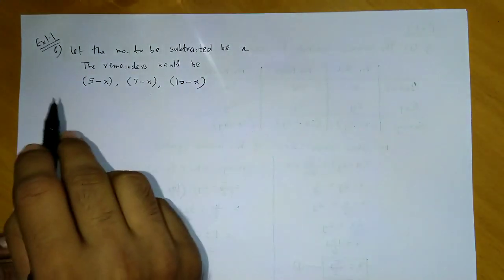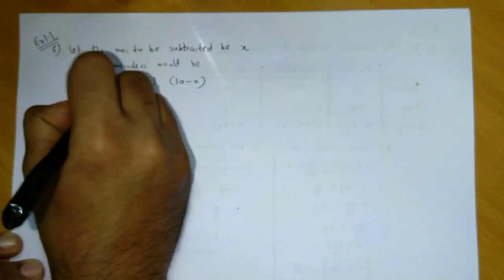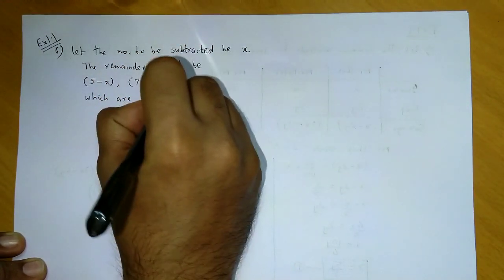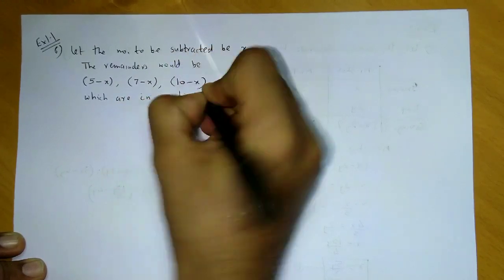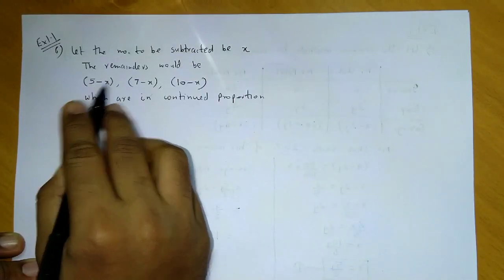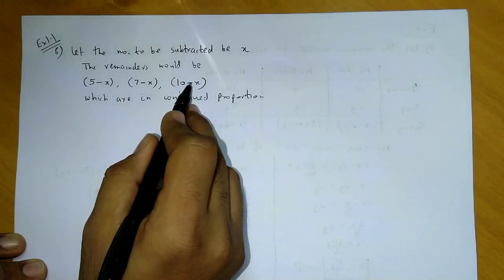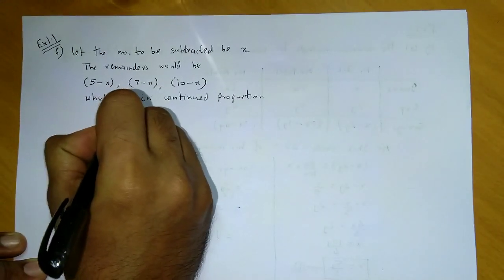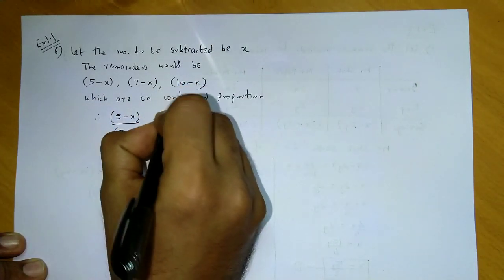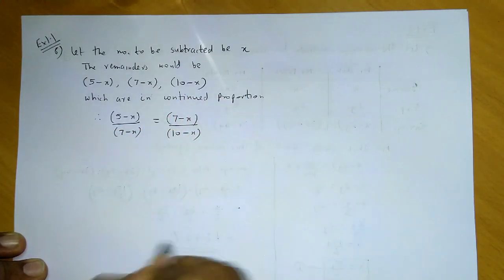After subtracting x from 5, 7, and 10, these three numbers are in continued proportion. Since A upon B equals B upon C, we can say: (5 minus x) upon (7 minus x) is equal to (7 minus x) upon (10 minus x).